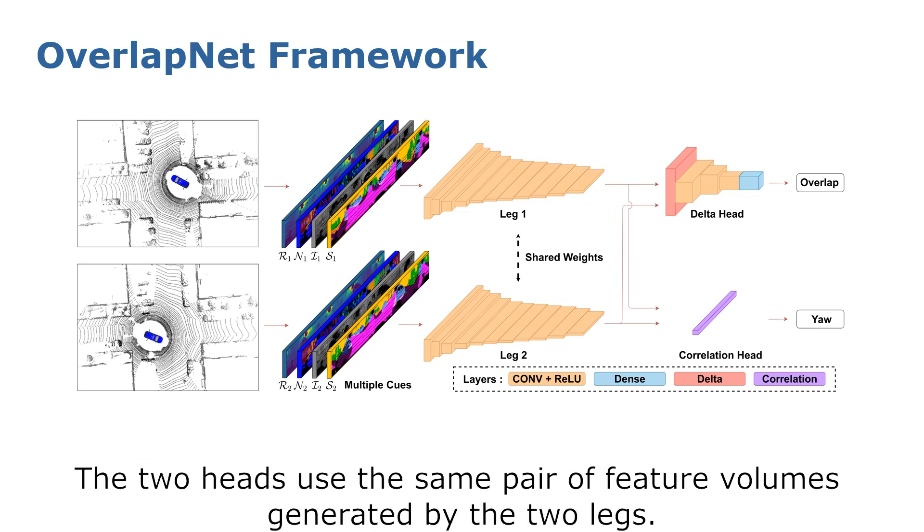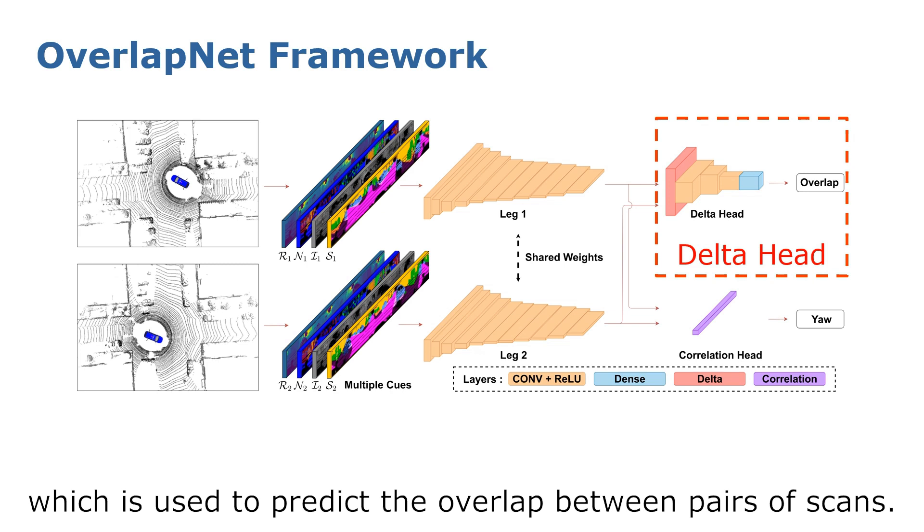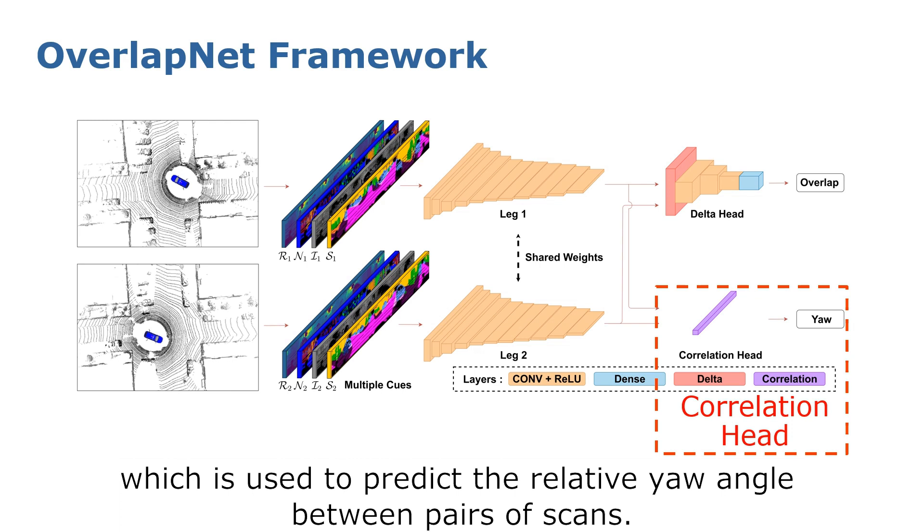The two heads use the same pair of feature volumes generated by the two legs. One head is called the delta head, which predicts the overlap between pairs of scans. The other head is called the correlation head, which predicts the relative yaw angle between pairs of scans.